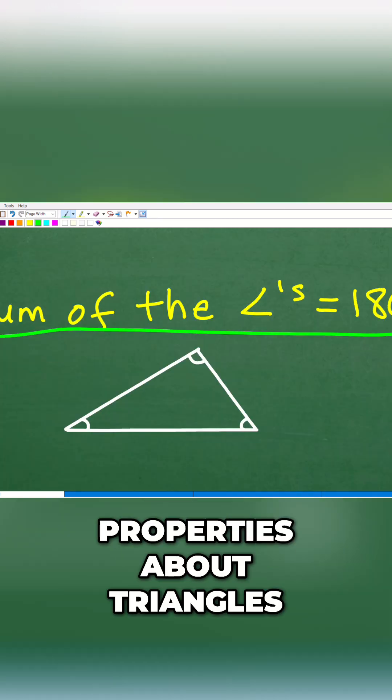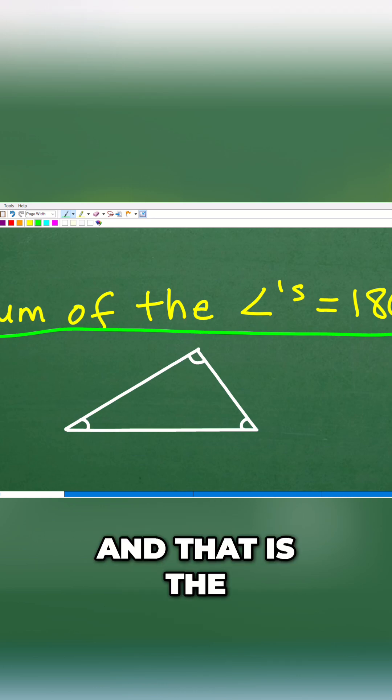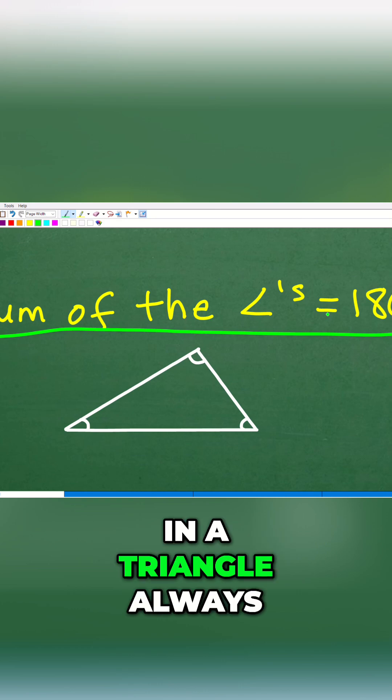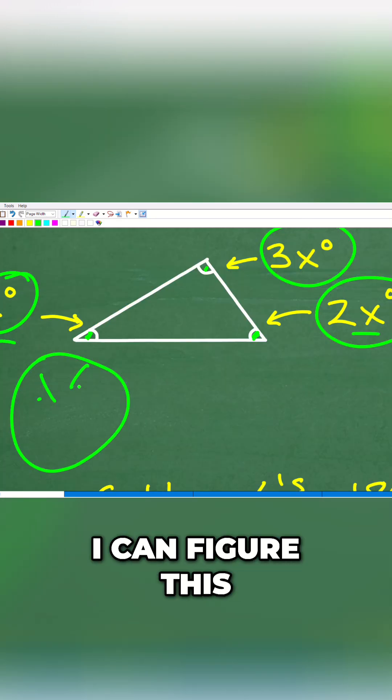There's a lot of properties about triangles, but everybody should know this property and that is the sum of the angles in a triangle always equal 180 degrees.